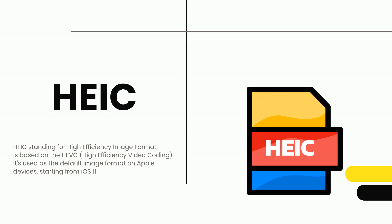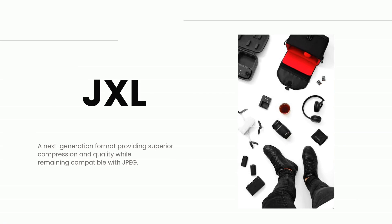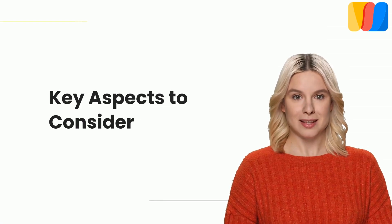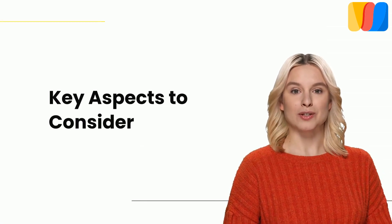Finally, JXL, or JPEG XL, is an image format based on Google's PIK format and Cloudinary's FUIF (Free Universal Image Format). The goal of JPEG XL is to provide an image format that retains compatibility with JPEG but offers superior compression and quality.